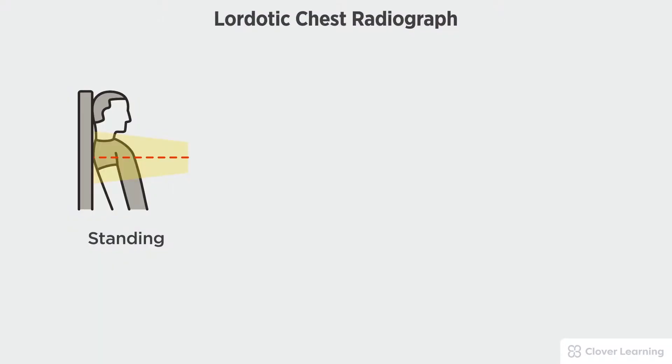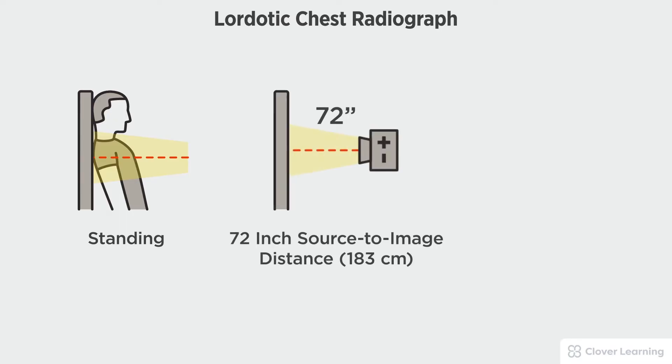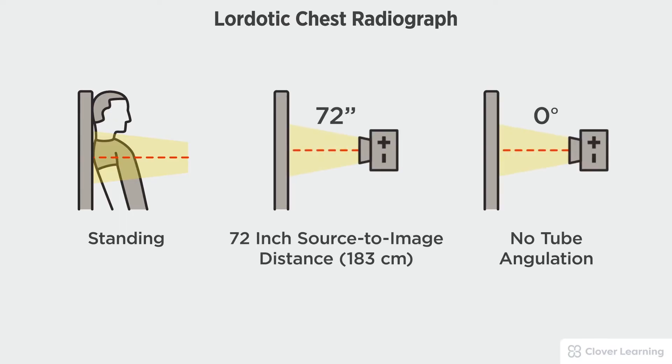In this view we will be demonstrating the lordotic chest. The lordotic chest should be performed with the patient standing at the upright bucky in the lordotic position, with a 72-inch source to image distance and no tube angulation. The lordotic view of the chest shows the apices of the lungs.